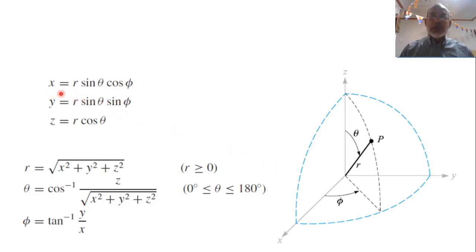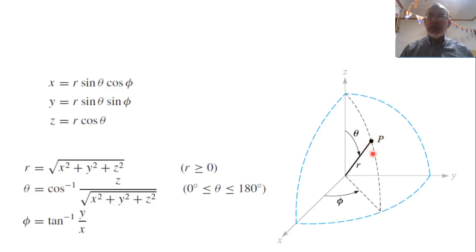To find the equivalent Cartesian coordinates from spherical coordinates: x is the projection of R onto the XY plane and then onto the x-axis, giving x = r sinθ cosφ. Similarly, y is the projection of R onto the XY plane, which is r sinθ, projected onto the y-axis, giving y = r sinθ sinφ.